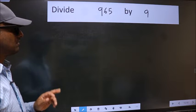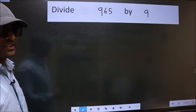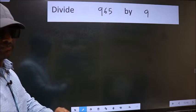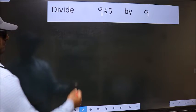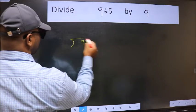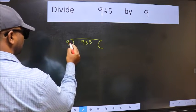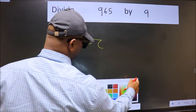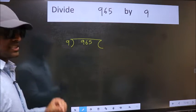Divide 965 by 9. To do this division we should frame it in this way: 965 here and 9 here. This is your step 1.